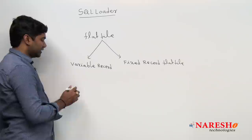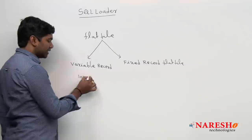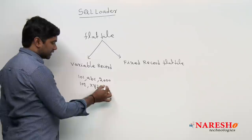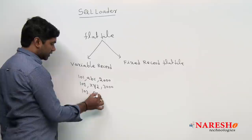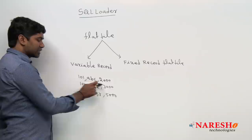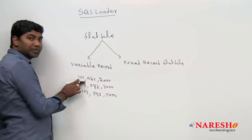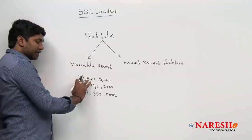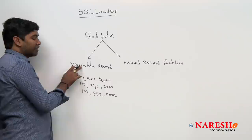For example, records like 101, ABC, 2000; then 102, XYZ, 3000; then 103, PQR, 5000. Here, in between the fields within each record, some delimiter is there — delimiter means comma, dollar symbol, hash, and so on. These are called delimiters. Whenever a flat file has records with delimiters between fields, those flat files are called Variable Length Record Flat Files. When using a Variable Length Record Flat File, we create a separate control file.